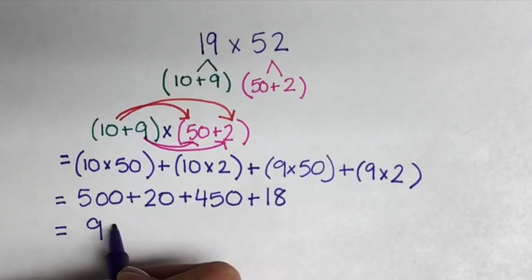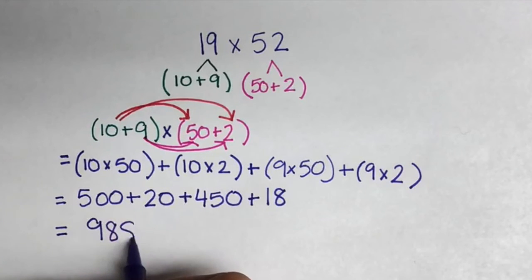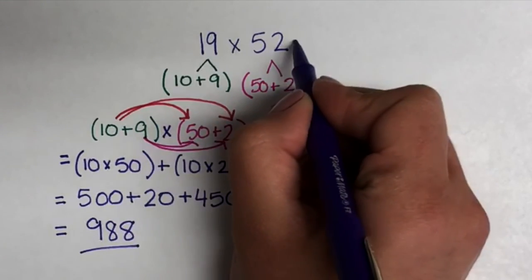My hundreds, my tens, and then my ones. And you get a product of 988.